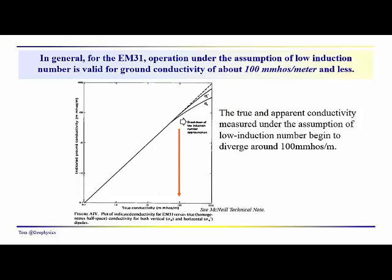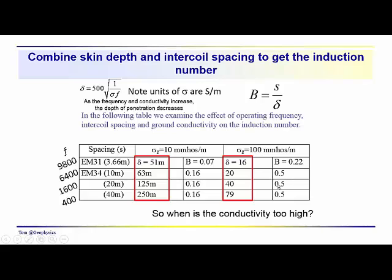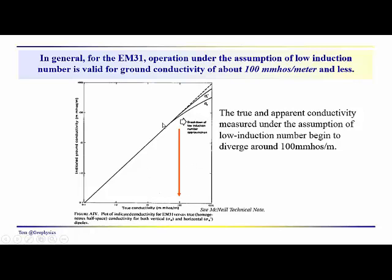When do we have to say, okay, I'm not getting a realistic estimate of the actual conductivities, which are shown by the solid lines here. This figure comes from McNeil's technical note. And you can see that the true and apparent conductivities begin to diverge around 100 millimhos per meter. And so, up at around 100 millimhos per meter, over here, we've got induction numbers of 0.5, 0.22. In this 10 millimhos per meter range, we're 0.16, 0.07. So, induction numbers down in this range, we're getting a good agreement between the actual ground conductivity and the apparent ground conductivity calculated using this low induction number approach.